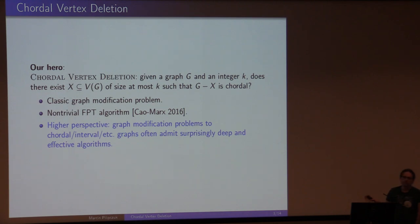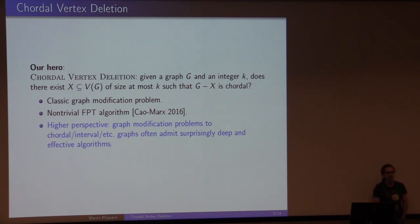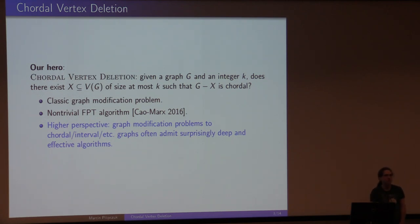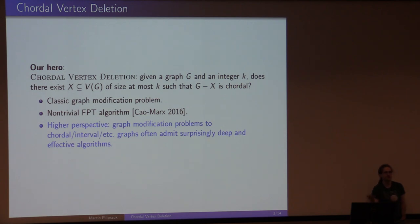Why do we care about this problem? I worked a few years ago quite a lot on chordal, interval, unit interval, and similar graph classes, and found them really satisfying at the theory and combinatorics level. We found a number of positive results — FPT algorithms, kernels, sub-exponential algorithms for some completion problems. Most of these results were positive, but all required developing new techniques, new understanding, and new combinatorial tools to cope with these graph classes.